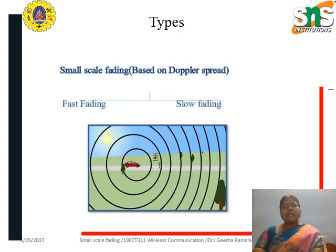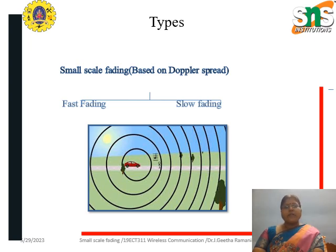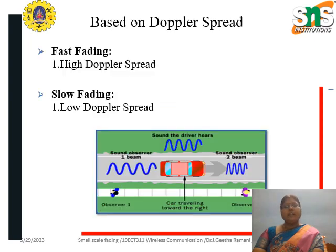Another classification of small scale fading is based on Doppler spread. Based on Doppler spread, we can classify it as fast fading and slow fading. As the name implies, fast fading has high Doppler spread, whereas slow fading has low Doppler spread.